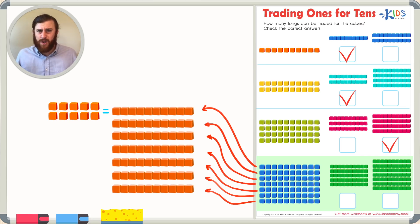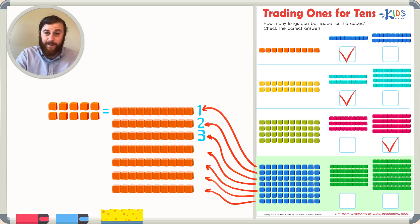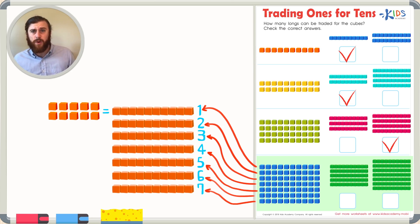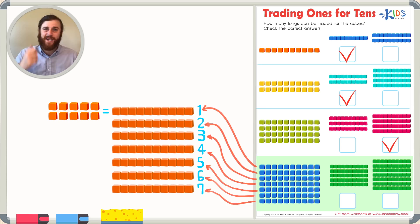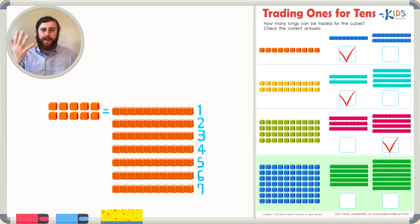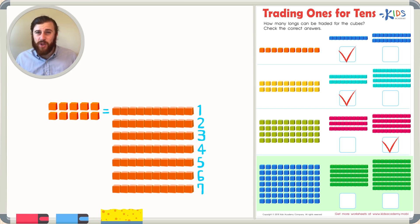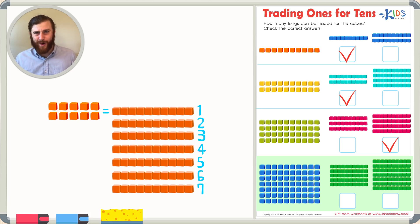So how many longs are there in total? Let's count them: one, two, three, four, five, six, and seven. There are seven rows of longs. Do you know how many cubes there are in total? We can count by tens — there are seven longs, so let's count: 10, 20, 30, 40, 50, 60, and 70. That means there are 70 cubes in total. Let's find the correct answer choice that shows 70 cubes, or seven longs.